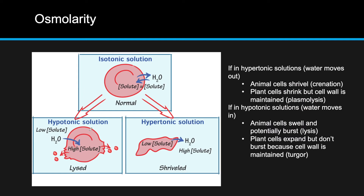In application, if you place a cell in a hypotonic solution, water will enter the cell, increasing its volume, and if it gets too big, it will burst — this is known as lysis. On the other hand, placing a cell in a hypertonic solution causes water to leave, shrinking the volume and causing a shriveled, wavy appearance known as crenation.